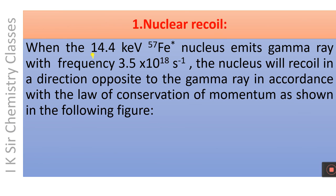When the 14.4 keV Fe-57 nucleus emits a gamma ray with frequency 3.5×10¹⁸ per second, the nucleus will recoil — that is, the nucleus will move in a direction opposite to the gamma ray — in accordance with the law of conservation of momentum, as shown in the following figure.